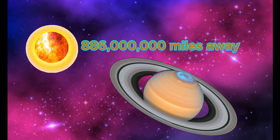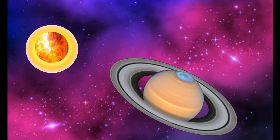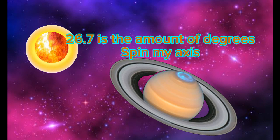886 million miles away is my distance from the sun, that is why I'm chilly. Hydrogen and helium are what I'm mostly made of, and my atmosphere from the surface above. 26.7 is the amount of degrees spins my axis.